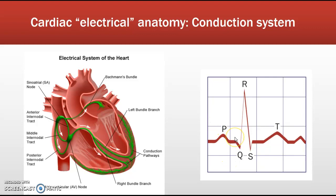On the initiation of depolarization by the sinoatrial node, the distance from the beginning of the P wave to the beginning of the QRS complex is called the PR interval — it measures the time for the impulse to travel from the SA node to the AV node. The QRS represents ventricular depolarization — the journey through the bundle of His and Purkinje fibers. The T wave represents repolarization of the ventricles.